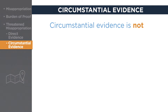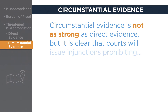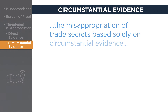Although circumstantial evidence is generally not considered as strong as direct evidence, it is clear that courts will issue injunctions prohibiting the misappropriation of trade secrets based solely on circumstantial evidence that indicates such activity is eminently likely to occur.